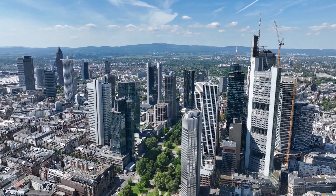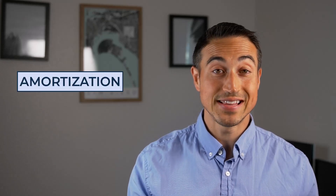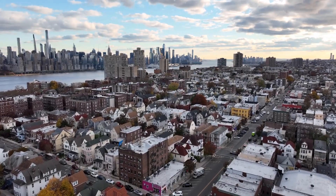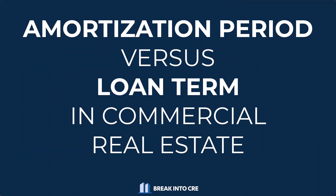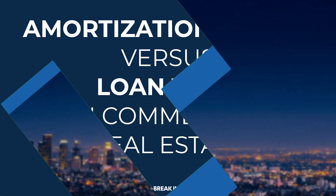Commercial real estate loans are very different than residential home loans, and the terms of these deals can be a lot more complex. One of the biggest differences on the commercial side of the industry is that the amortization period of these loans tends to be different than the loan term itself, which can have some really meaningful impacts on the economics of a deal. This video walks through the amortization period and the loan term in commercial real estate in detail, and the impacts of changes to each on both a lender and a borrower.